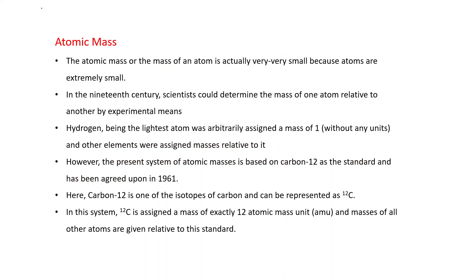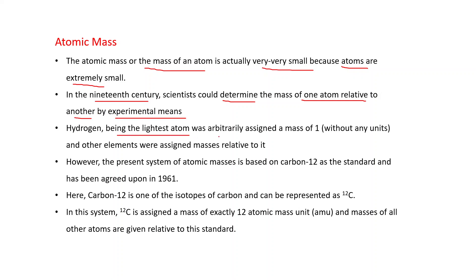First, let's come to atomic mass. The atomic mass or the mass of an atom is actually very very small because atoms are extremely small. In the 19th century, scientists could determine the mass of one atom relative to another by experimental means. Hydrogen, being the lightest atom, was arbitrarily assigned a mass of one without any units, and other elements were assigned a mass relative to it. But the present system of atomic masses is based on carbon-12 as the standard, and this was agreed upon in 1961.